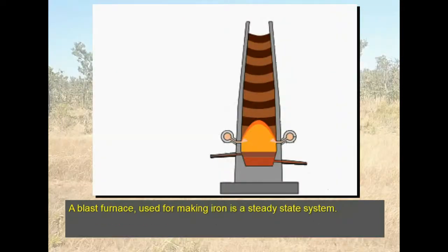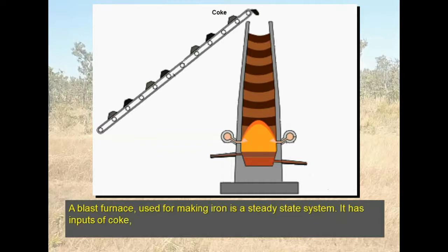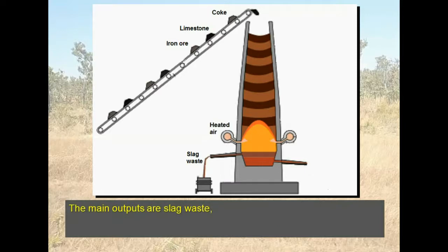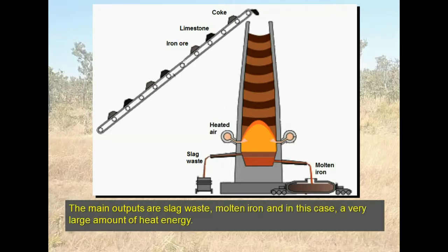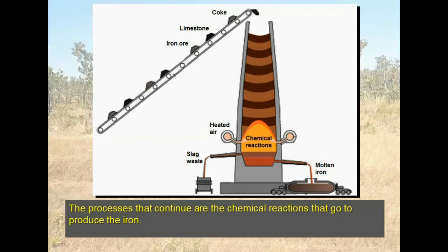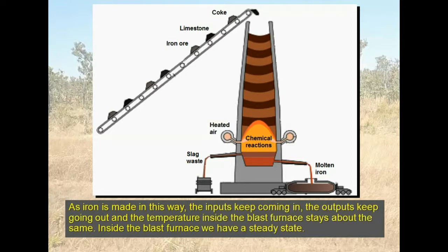A blast furnace used for making iron is a steady state system. It has inputs of coke, limestone, iron ore, and heated air. The main outputs are slag, waste, molten iron, and a very large amount of heat energy. The processes that continue are the chemical reactions that produce the iron. The inputs keep coming in, the outputs keep going out, and the temperature inside the blast furnace stays about the same — inside the blast furnace we have a steady state.